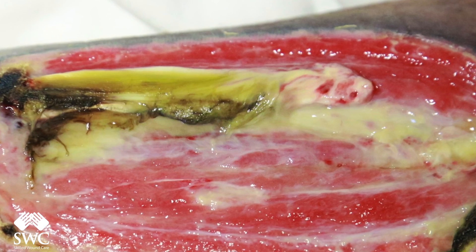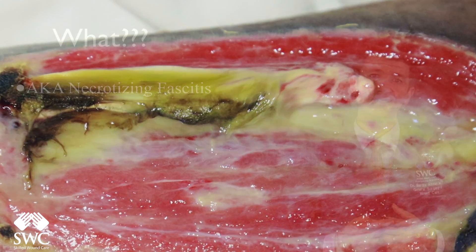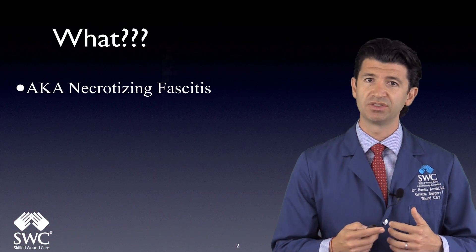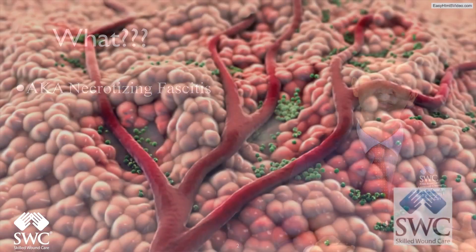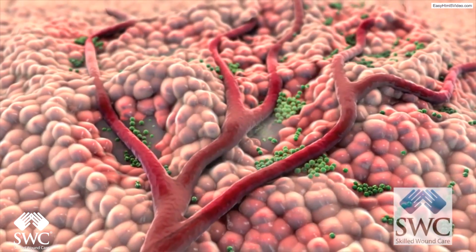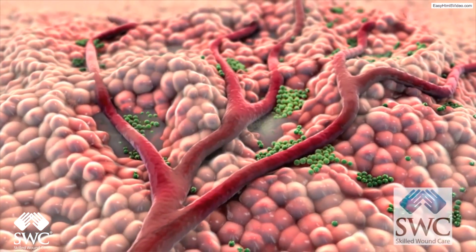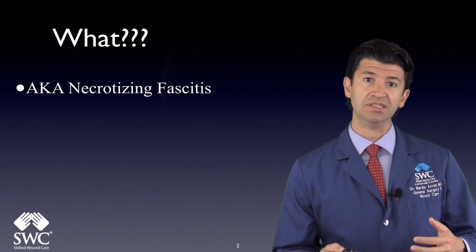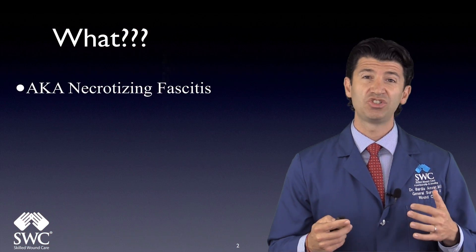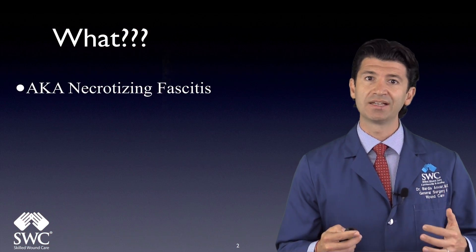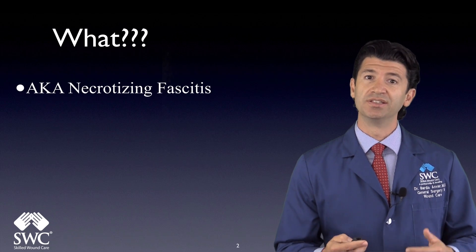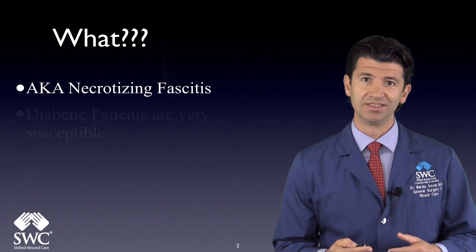It spreads fast, and this is a bacteria that's basically causing an infection that's killing all of your tissues in the area, including your skin. And that's why you see the flesh-eating nastiness that you see on the skin in this disease.